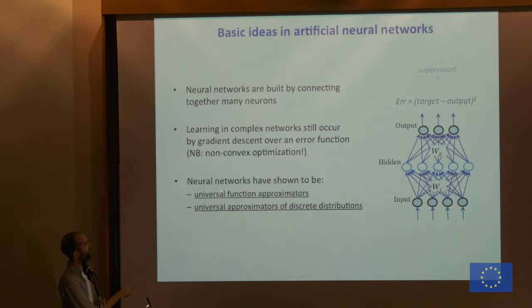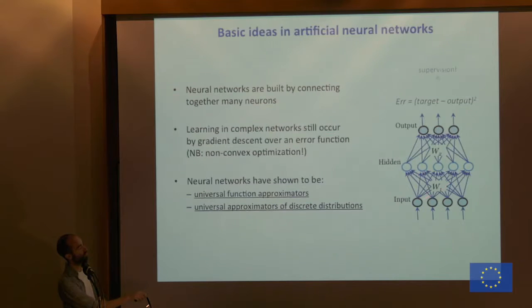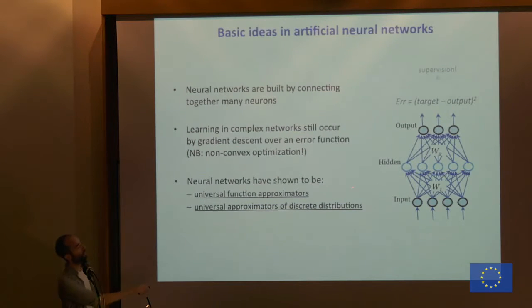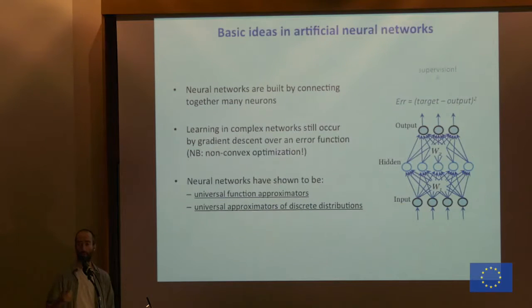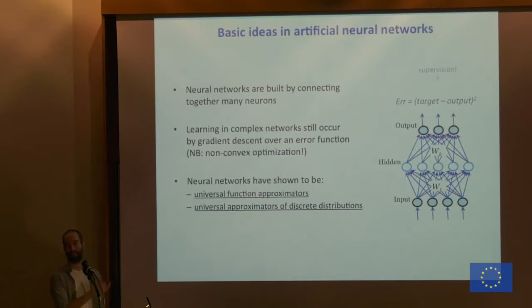These types of models have been shown to be universal function approximators — by providing enough hidden units, we can approximate any function. Similarly, unsupervised models have been shown to be universal approximators of discrete distributions in the input. Neural networks are very, very powerful and can theoretically abstract almost any function. Of course, this is in theory — in practice, the algorithm might take an impractically long time to converge.